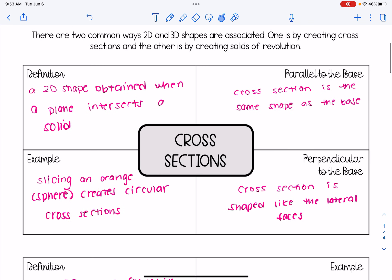First, let's talk about cross-sections. The definition of a cross-section is a two-dimensional shape that's obtained when a plane intersects a solid. And remember, a solid here is just a word that describes a 3D shape. So we're taking a 3D shape and we're getting or obtaining a 2D shape.